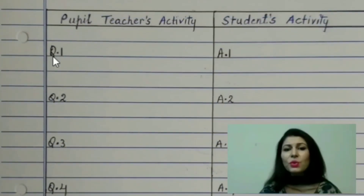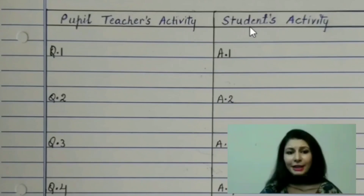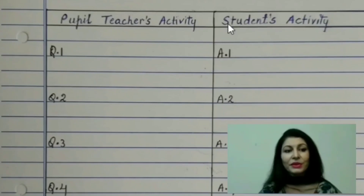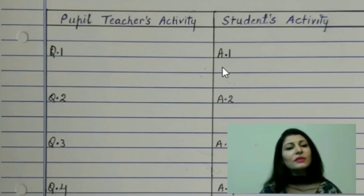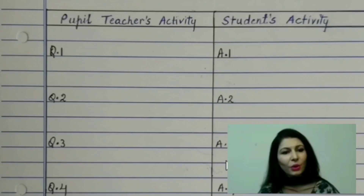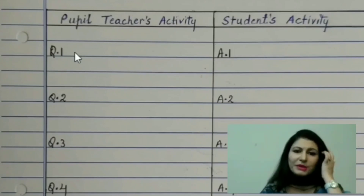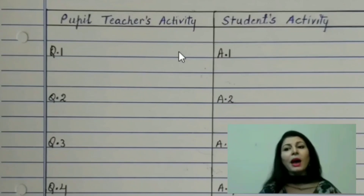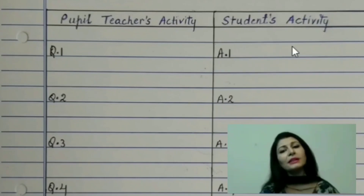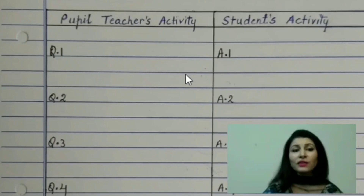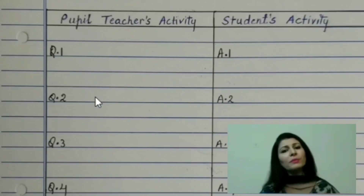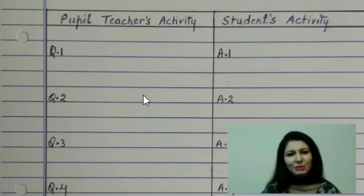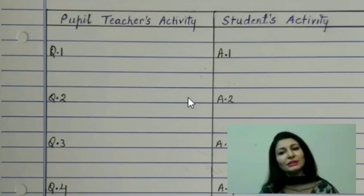Here you will make two columns. In the first column, write pupil teacher's activity, and in the second column write student's activity. Here you can ask three to four questions. The expected answers of these questions would be written in the student's activity column. The first question would be related to their previous knowledge. This question will be written in the pupil teacher's activity column and the answer to this question will be written in the student's activity column. You have to frame the next question from the answer of the first question, which means that the next question should be linked to the answer of the first question.